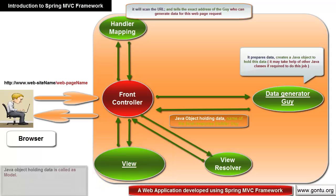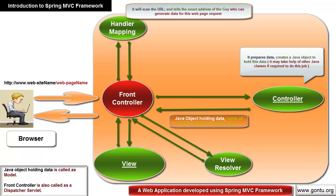This rendering component is called the view component. The Java object holding the data is called the model component. The component that returns the model object along with the name of the view is called the controller. The front controller is also called the dispatcher servlet in Spring MVC. The view component is typically a JSP page, but you may use other popular technologies such as Velocity or FreeMarker. This is the complete workflow of a web application developed using Spring MVC.